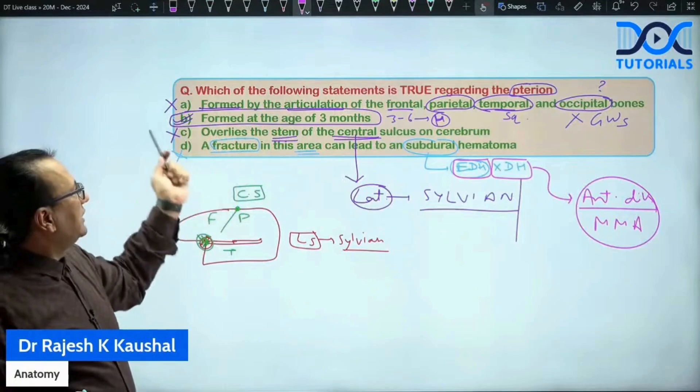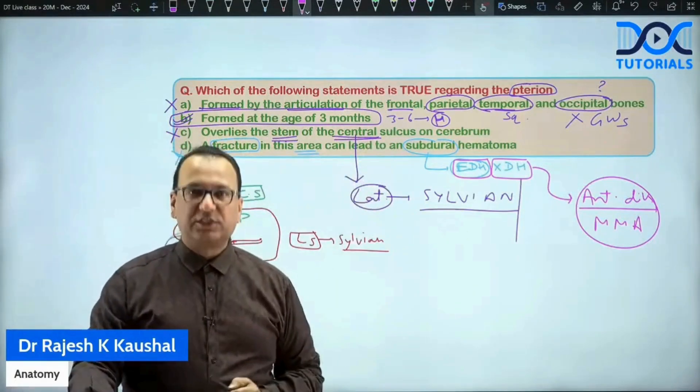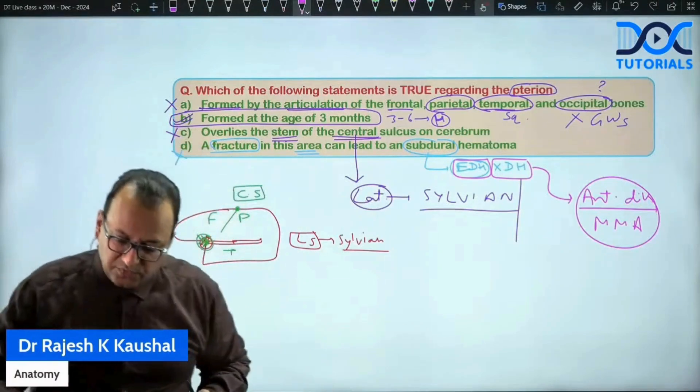So, this is a wrong choice because it is not subdural. Subdural is because of some bridging veins and there are other reasons for that. Out of all these choices, everything is wrong except choice number B because it is definitely formed at three to six months. So, three months is fine. So, let us proceed further.